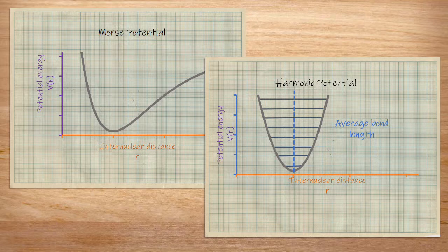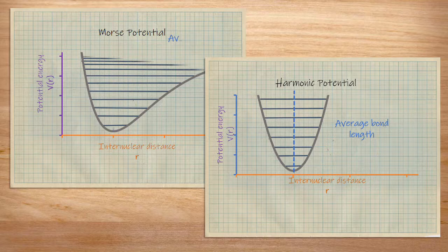In the anharmonic oscillator, there's a limit. The energy levels begin to bunch up as the quantum number V increases.